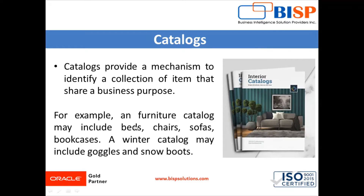The electronics catalog also includes refrigerator, microwave, tube light, fans, and many more. Similarly, a furniture catalog may include beds, chairs, sofas, and bookcases.